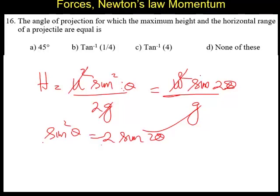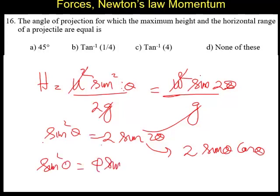We will have 2 sine 2 theta. Sine 2 theta can be written as 2 sine theta cos theta. Sine square theta equals 4 sine theta cos theta. Sine and sine square we can remove. 4 cos theta equal to sine theta.